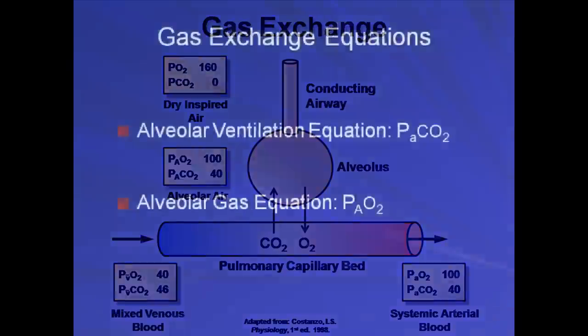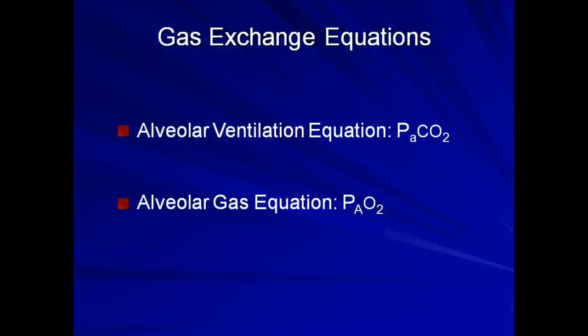There are two equations that are critical to understanding gas exchange. These are the alveolar ventilation equation, which explains the factors determining the arterial carbon dioxide tension, and the alveolar gas equation, which explains the factors determining the alveolar oxygen tension. While I don't consider it necessary to memorize these equations, it is imperative to remember the key points of each.